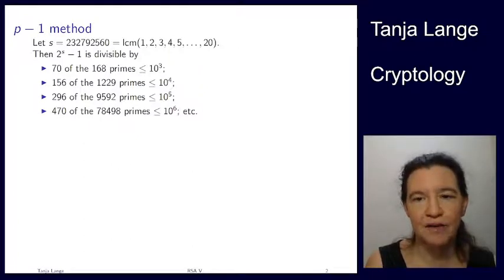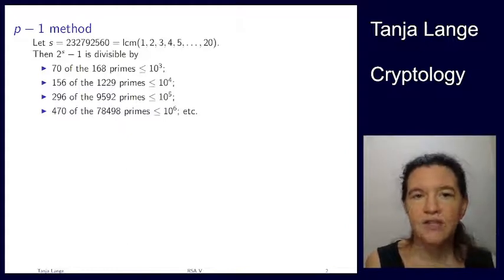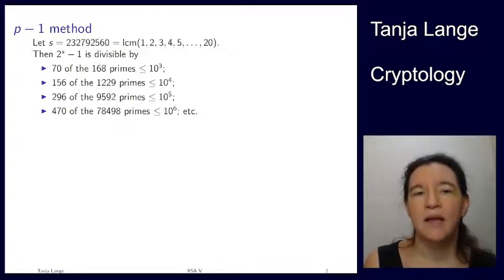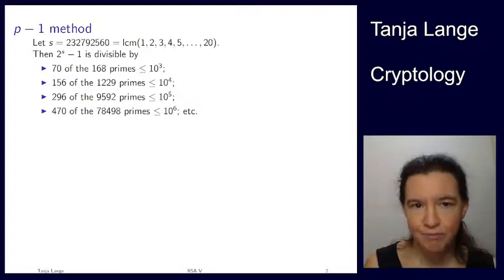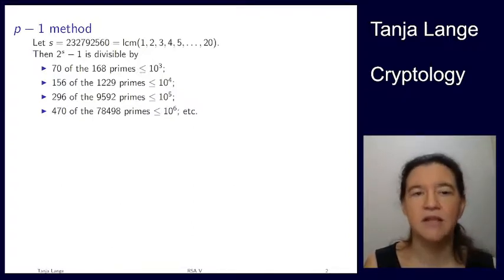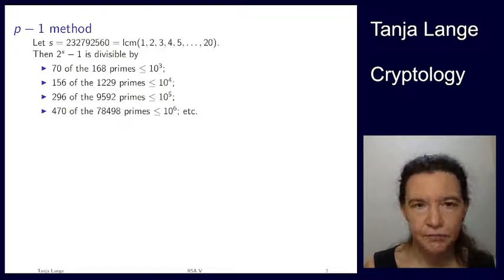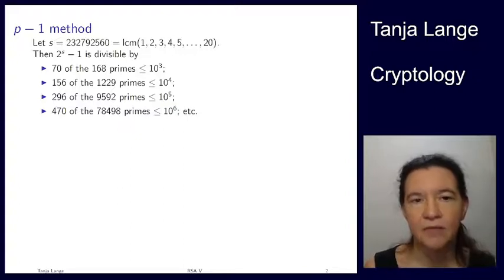Let me start by motivating the p-1 method with a somewhat surprising fact. Here we're taking a number 2 to the s minus 1, where s is a pretty large number — about 232 million something. I'm computing 2 to the s minus 1, which is a number with 232 million bits. The computer can handle this. And then I'm asking: how many of the primes up to 1000 divide this number?